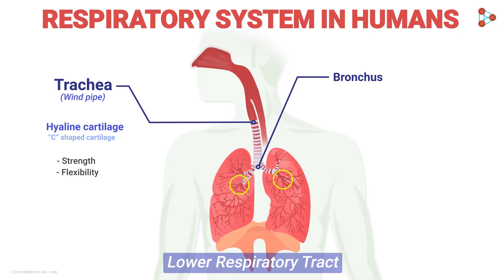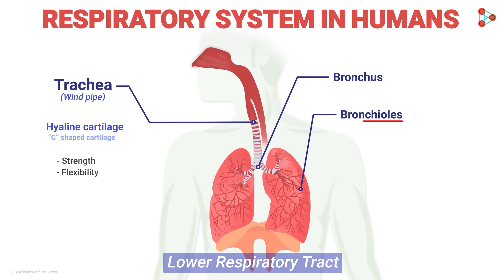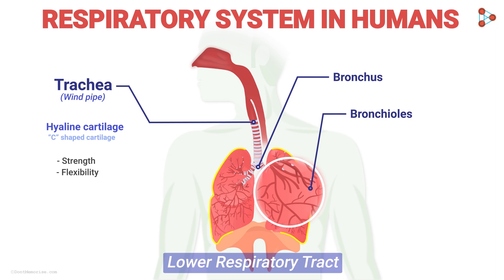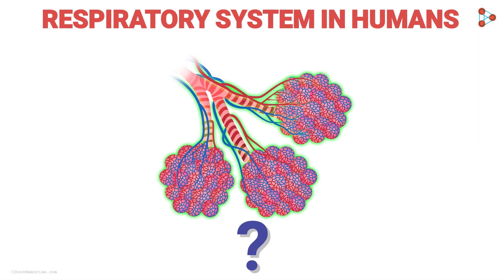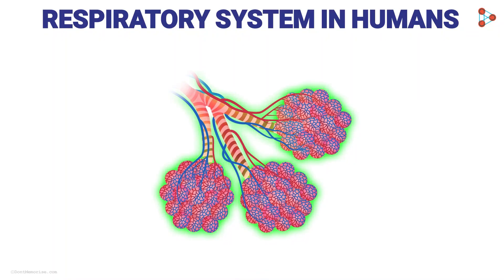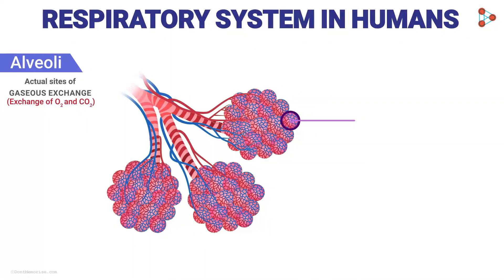The bronchi enter the respective lungs to get further divided into bronchioles. The bronchioles are smaller, root-like structures present inside the lungs. These ultimately lead to bundles of tiny sacs that appear like a cluster of grapes. These sacs form the basic units of the respiratory system — they are the actual sites of gaseous exchange. The exchange of oxygen and carbon dioxide between the lungs and the blood occurs in the alveoli. One single ball like this is called the alveolus.